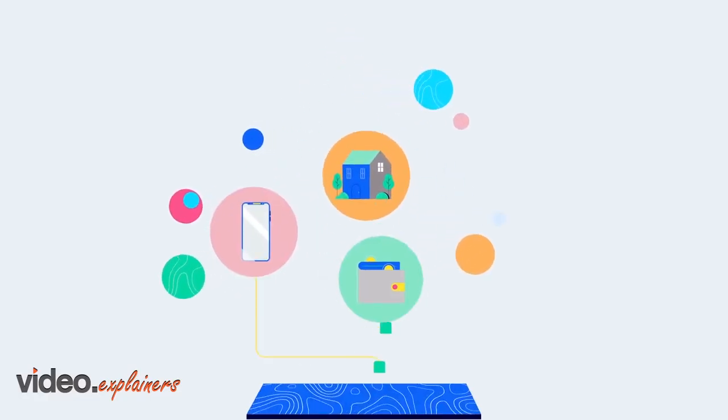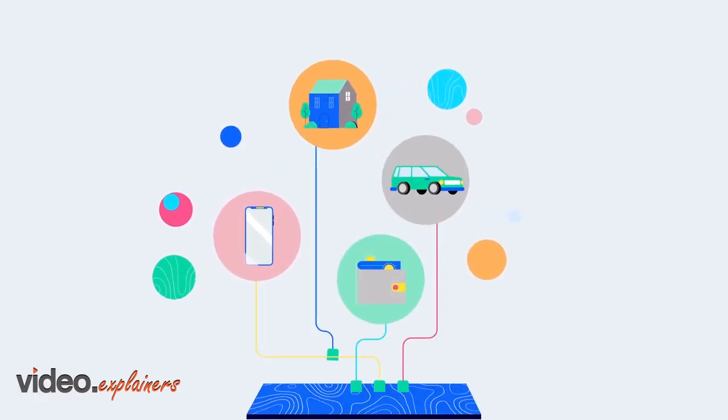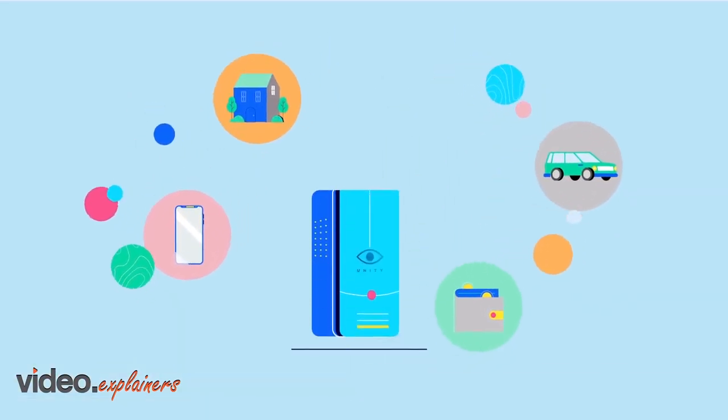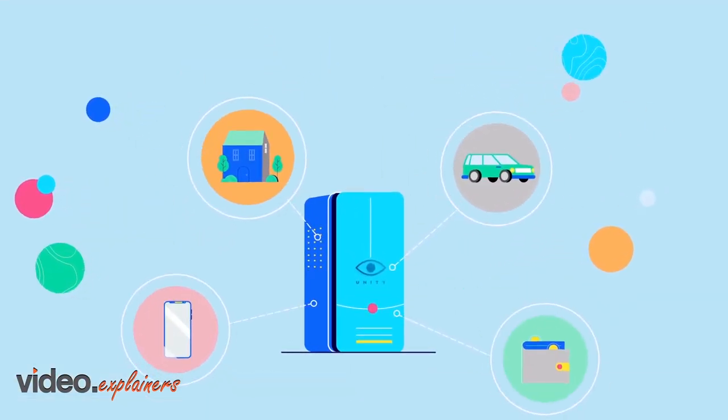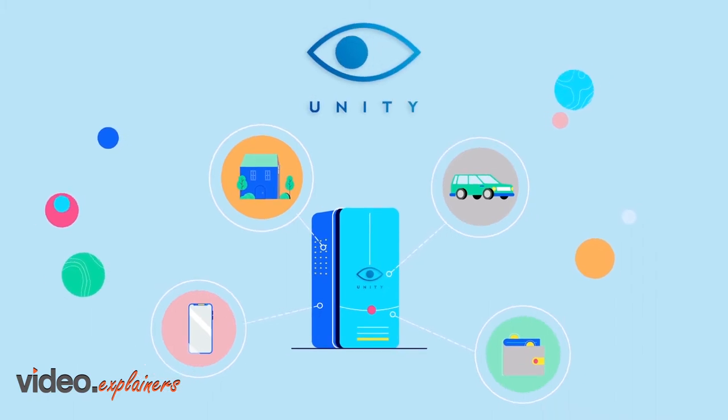Our goal is to build a platform in which your home, vehicle, mobile device, and wallet can truly integrate into one network and one user interface. This is the Unity system.